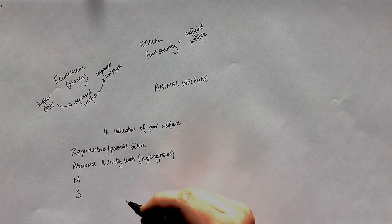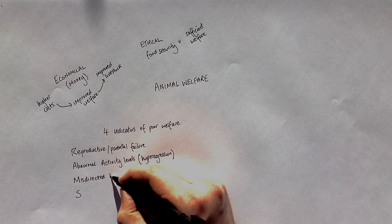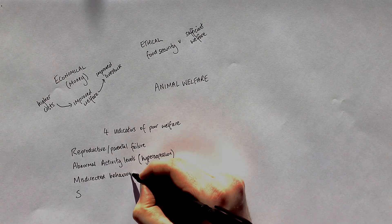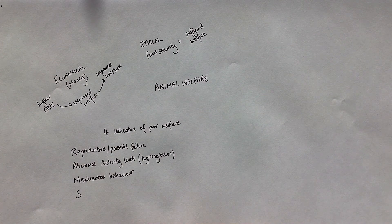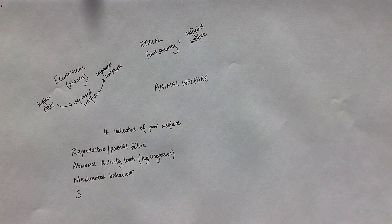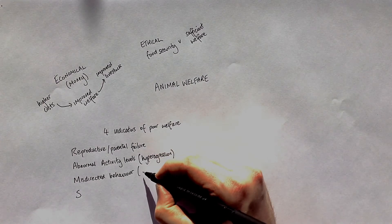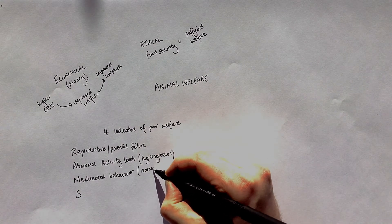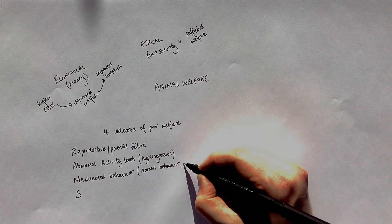The M is for misdirected behaviour. This is any normal behaviour that the animal would normally carry out, but it's doing it to such an extent that it's causing harm. An example of misdirected behaviour could be chickens over-plucking their feathers — repeatedly doing it until they don't have enough feathers. So: normal behaviour causing harm.